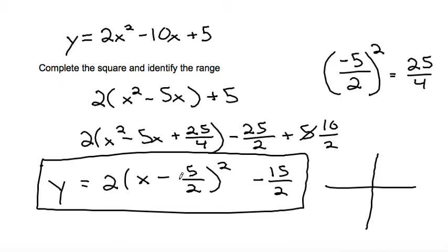And the vertex is going to be at negative 5 over 2, negative 15 over 2. So if this is negative 5 over 2 and this is negative 15 over 2, the vertex would be approximately here. And again, because the a is positive, it would open up.